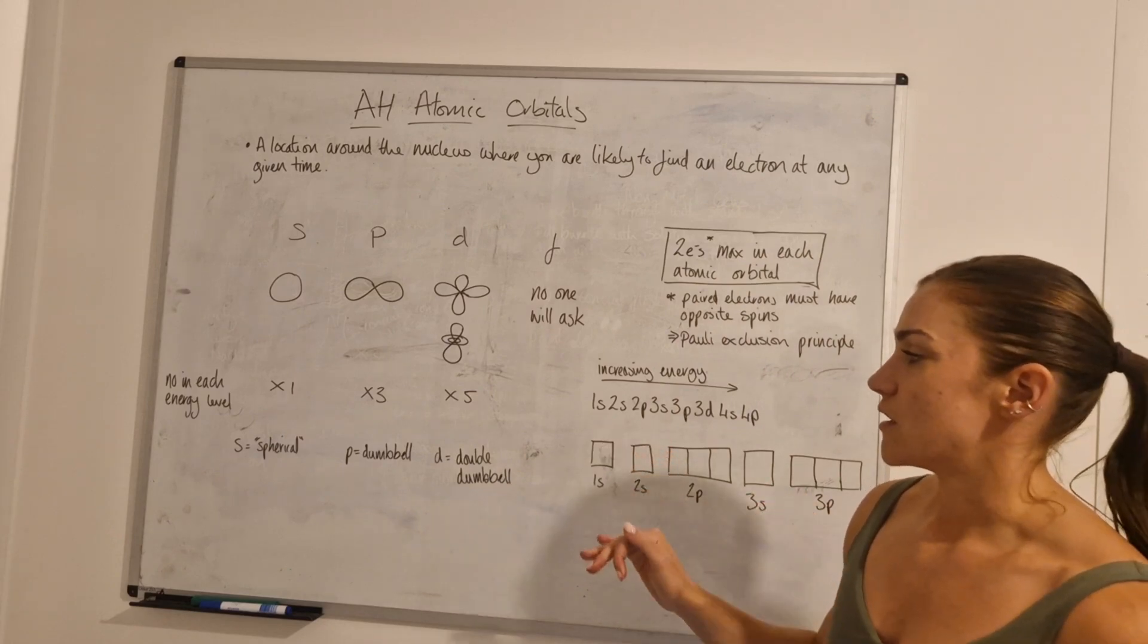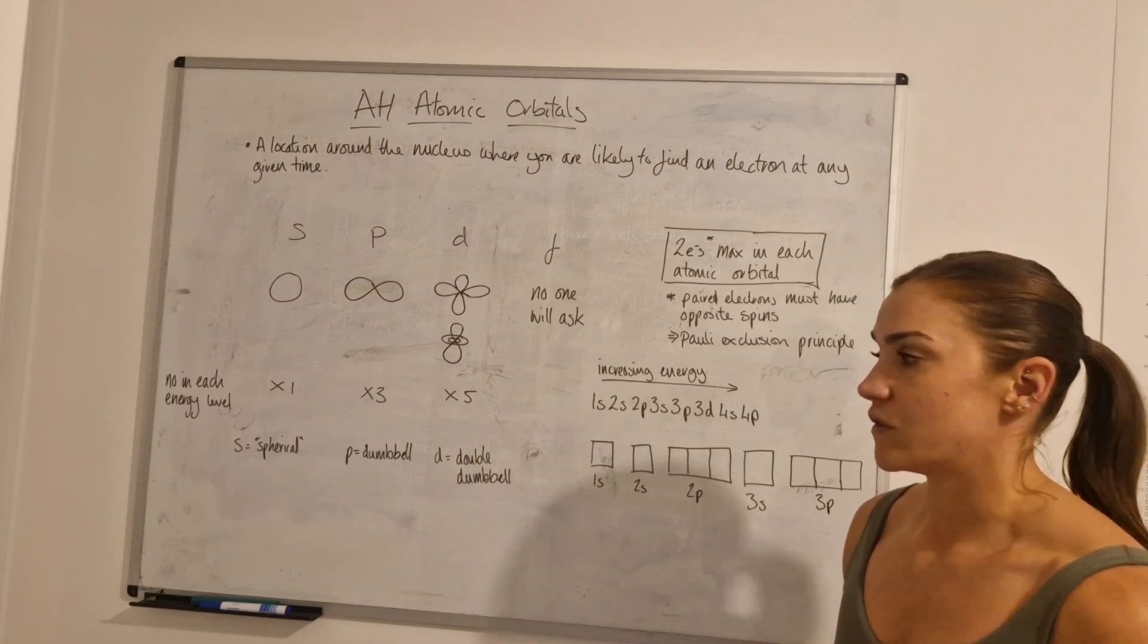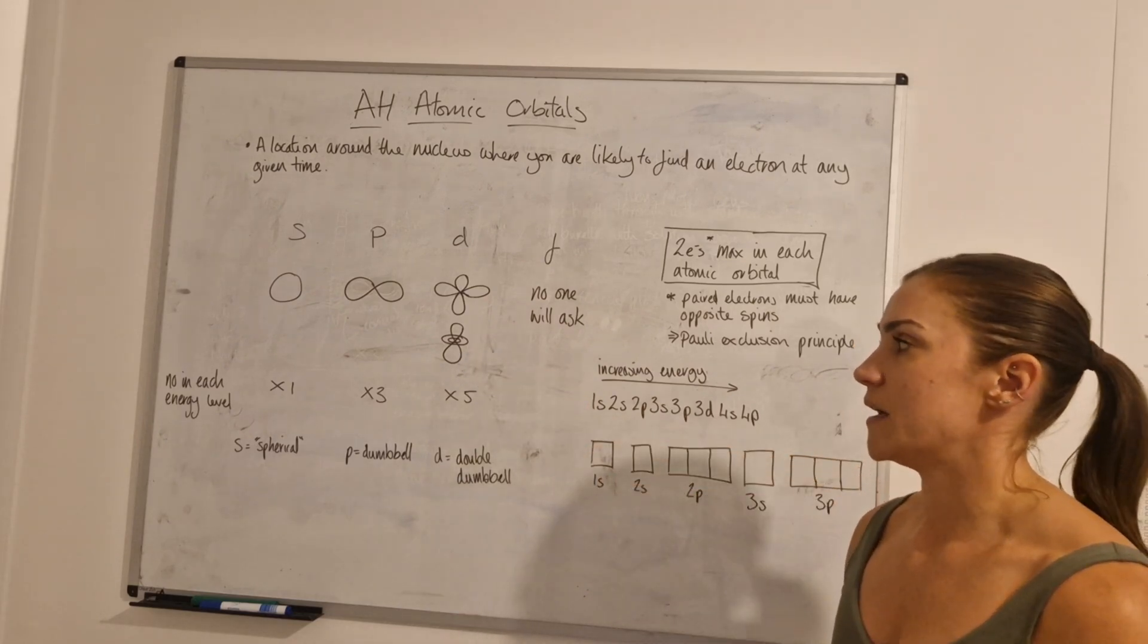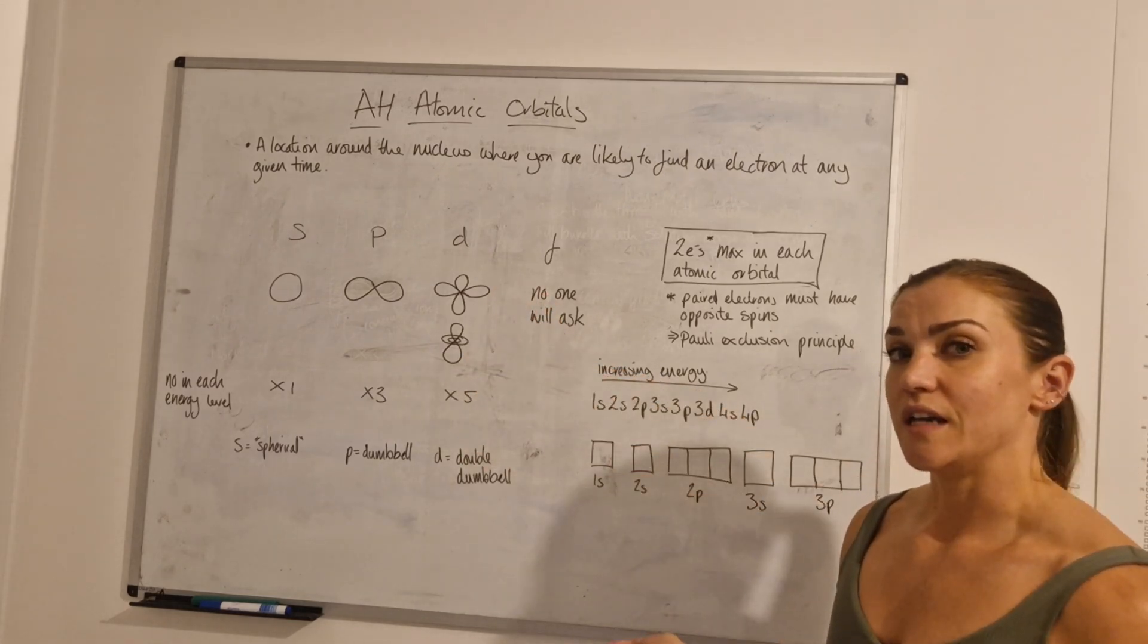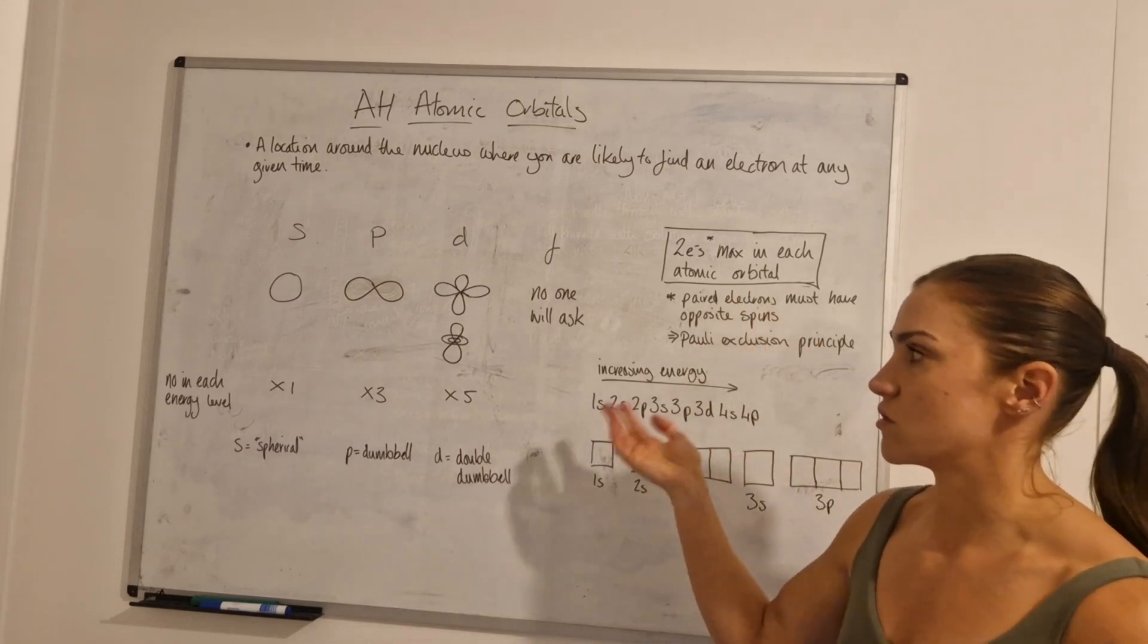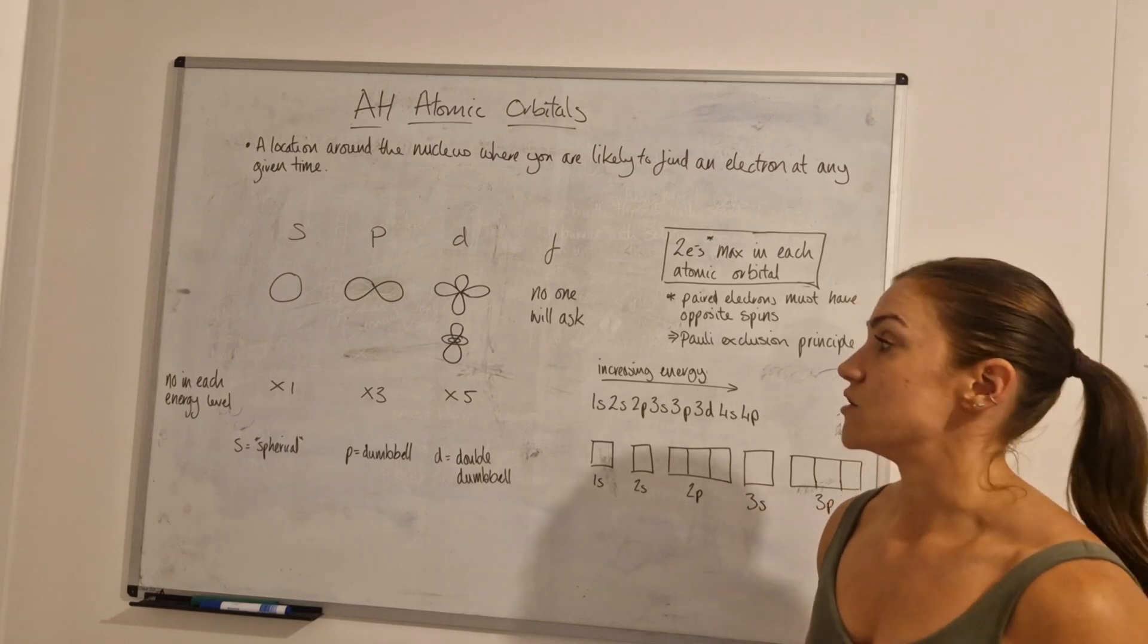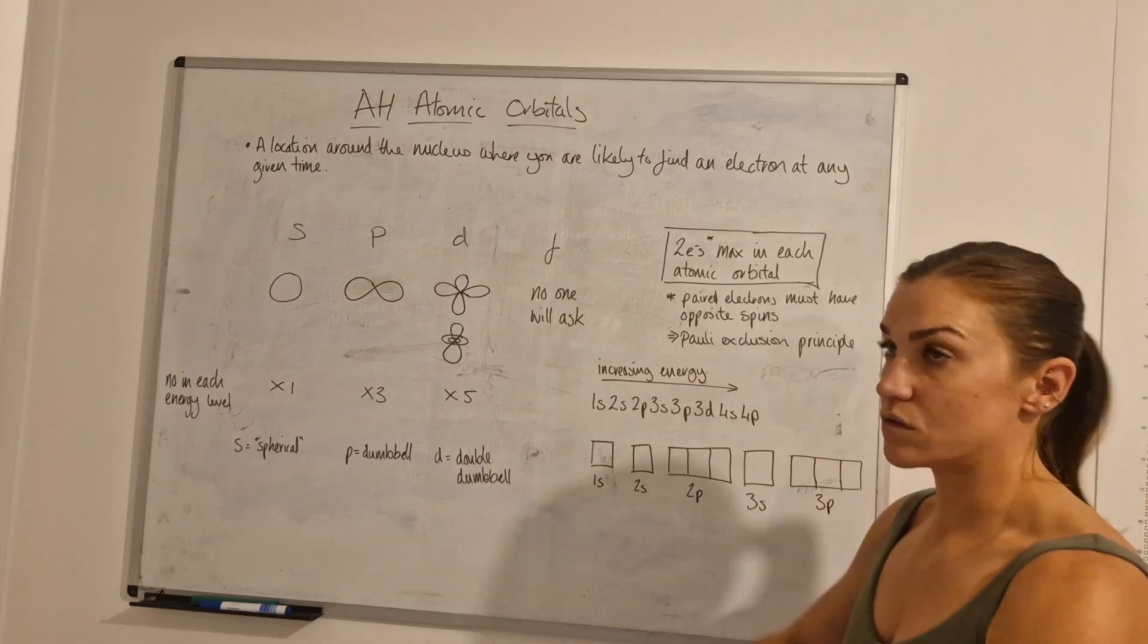Then the D orbitals. They're a double dumbbell, so in this case there is a D for double dumbbell, and there are five of those orbitals. I'm not going to draw them all because I'm not very good at drawing them. You could be asked to draw D orbitals, so as long as you can draw one of the two that's fine. You might be asked to pick out of a picture of different orbitals which one's the D one. In energy levels that have D orbitals, you don't get D orbitals until the third energy level, and there are five of them.